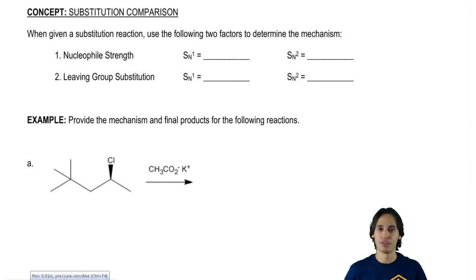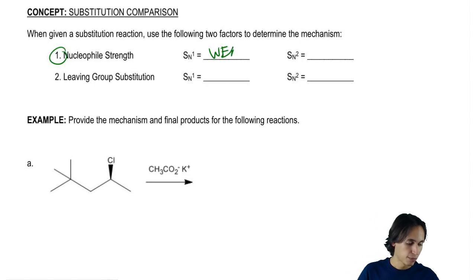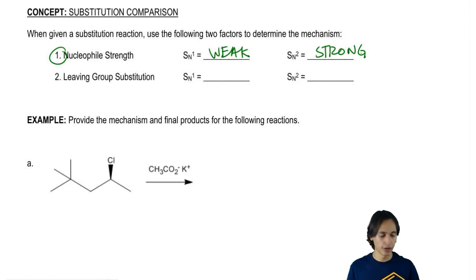So actually, why don't you guys help me fill these in. So the first thing we look at is nucleophile strength. What type of nucleophile is favored for an SN1 reaction? Do you guys remember? We said weak. Because remember that weak means that it's not going to start the reaction. It's going to wait for the carbocation to form. So that means what kind of nucleophile is favored for SN2? Strong. Strong is favored because we want it to do a backside attack. Is that cool so far?